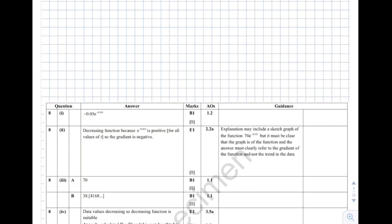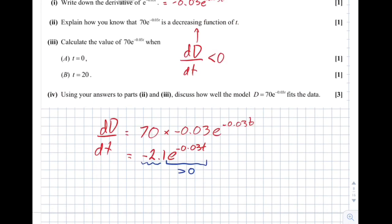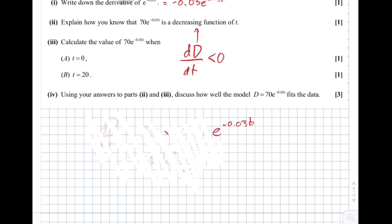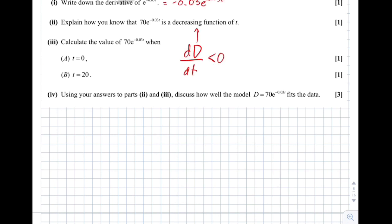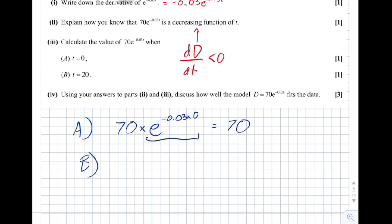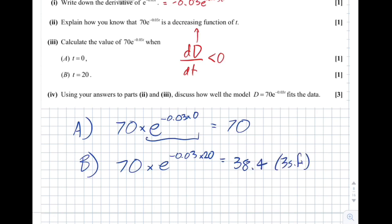Calculate 70 e to the minus 0.03t for t equals 0 and t equals 20. For t equals 0: 70 times e to the 0, and e to the 0 is 1, so the answer is 70. For t equals 20: substitute 20 into the formula using the calculator — on the Casio, press Alpha then the times-10-to-the-power button to get e. With t equals 20, I get approximately 38.4 to three significant figures.